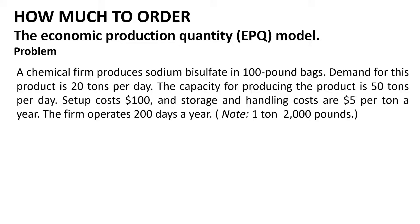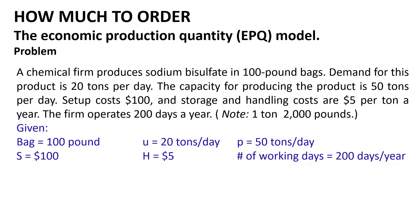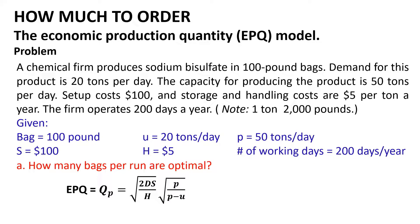Let us now solve a problem. A chemical firm produces sodium bisulfate in 100-pound bags. The demand for this product is 20 tons per day, and the capacity for producing the product is 50 tons per day. The setup cost is $100 and the handling costs are $5 per ton per year. The firm operates 200 days a year. Note: 1 ton equals 2,000 pounds. Answer the following questions: How many bags per run are optimal? What would the average inventory be for this lot size? Determine the approximate length of a production run in days. About how many runs per year would there be? The givens are: 1 bag = 100 pounds, usage rate u = 20 tons/day, production rate p = 50 tons/day, S = $100, H = $5.